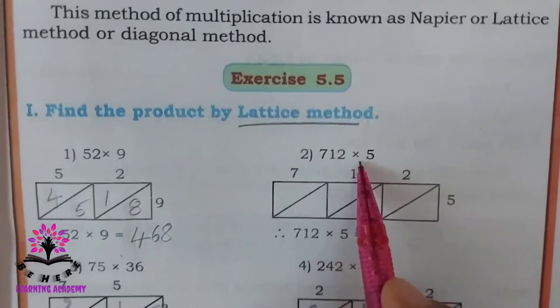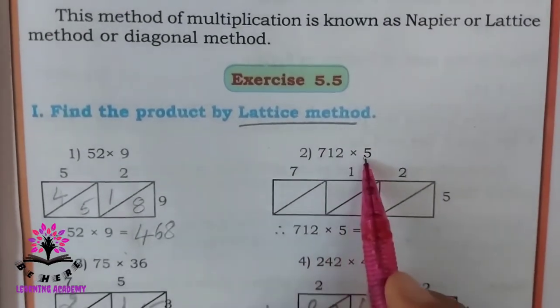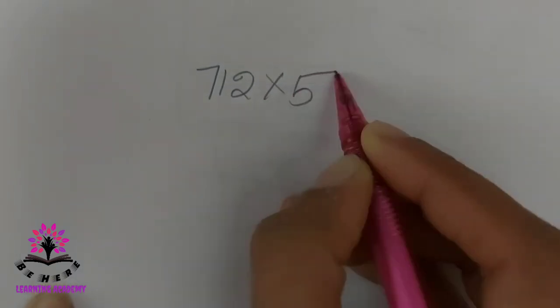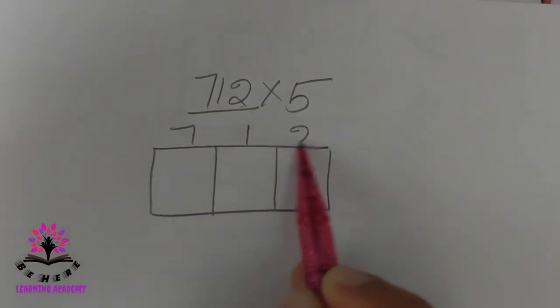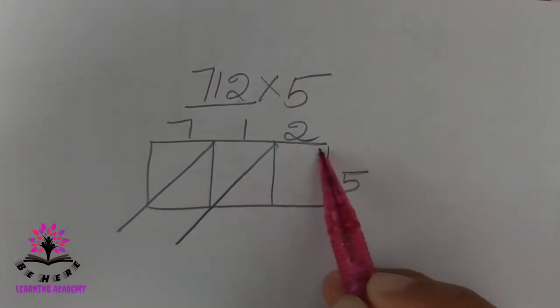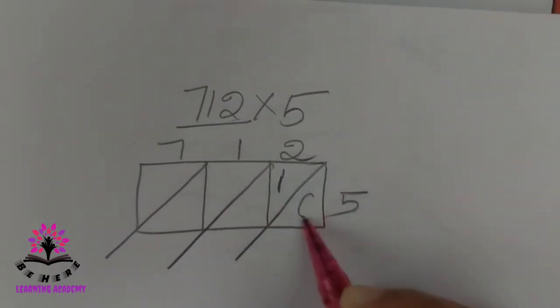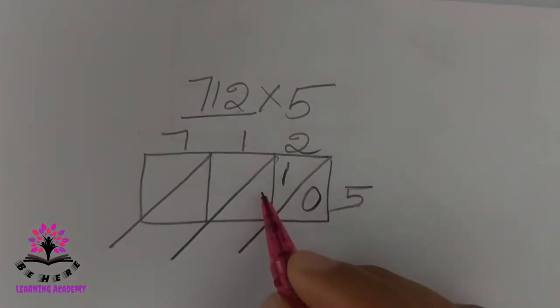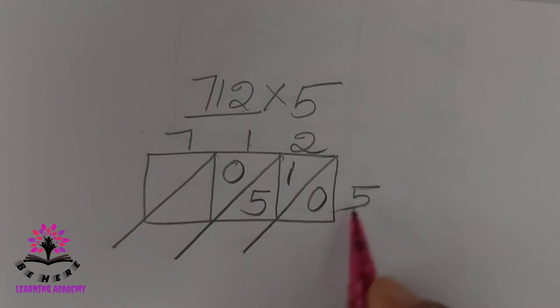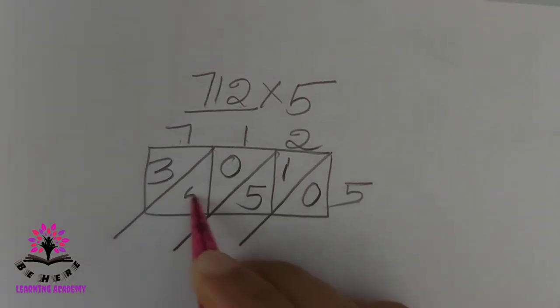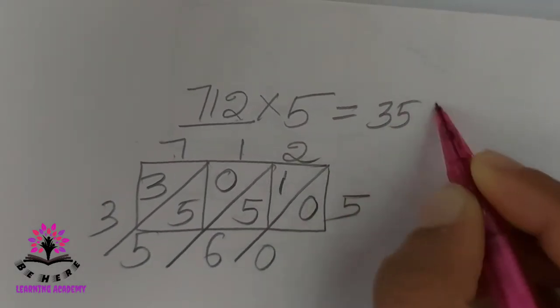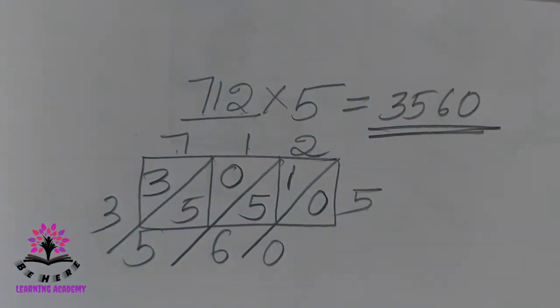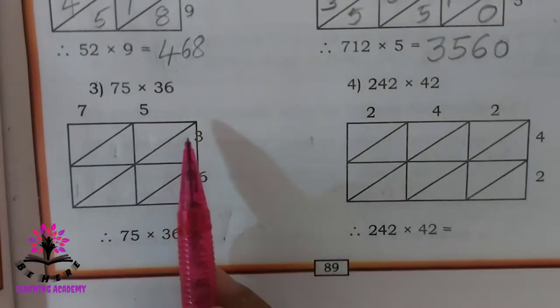The second problem is 712 into 5. Since there are 3 digits, draw 3 boxes. Write 712 on top and draw slanting lines. Now: 2 times 5 is 10, write 1 and 0. Then 1 times 5 is 5, write 0 and 5. Then 7 times 5 is 35. Adding diagonals: 0, then 1 plus 5 is 6, then 5, then 3. The answer is 3560.